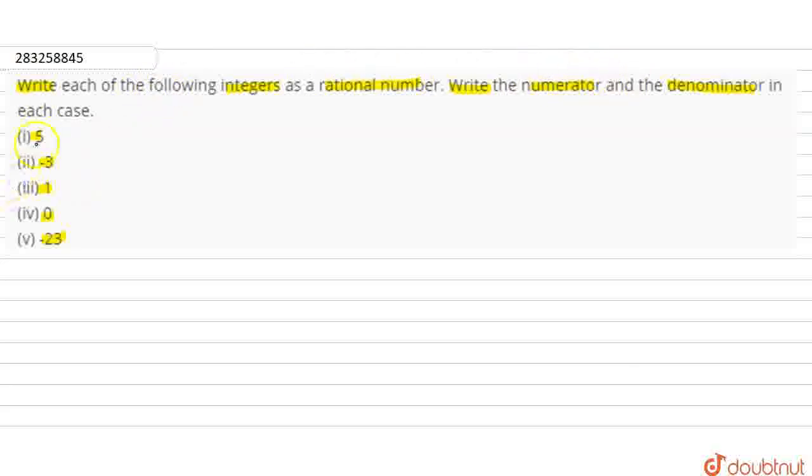First of all, the rational number is in P by Q form, which is in the form of P by Q, where P is the numerator and Q is the denominator.